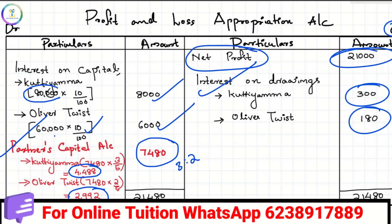Let's recap. In the Profit and Loss Appropriation Account, if you have the net profit, you credit the interest on drawings. We don't have drawings here separately. For the other entries, if you have a debit, share the contract, balance the account, then transfer to the capital account. This is the Profit and Loss Appropriation Account. This will be helpful. Thank you.